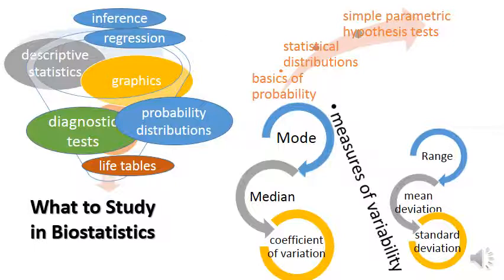As we know that biological data are highly variable. So range, mean deviation, standard deviation, and coefficient of variation serve as measures of variability. So here, it is imperative that we should understand the basics of probability, statistical distributions, and simple parametric hypothesis testing.